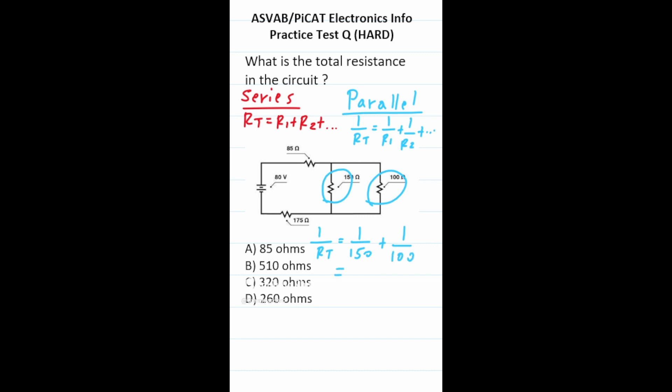1 over RT is going to be equal to 1 over R1. We're going to let R1 be 150 ohms. So that's 1 over 150 plus 1 over 100. We're adding two fractions. They have to have a common denominator. 150 and 100 both go into 300 evenly. To write 150 as 300, multiply by 2. This is 2 over 300. To write 100 as 300, multiply by 3. This is 3 over 300. This becomes 5 over 300. Total resistance is 300 over 5, which is 60. So the total resistance of these two resistors in parallel is 60 ohms.